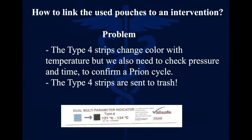What we see many people doing is inserting a type 4 strip inside the pouch. Type 4 strips change color based on temperature — if the temperature moves between 121 and 134 degrees, the color will change. But you have no information about how long the temperature was maintained, and no information about the pressure (3 bar). Not only is this insufficient to verify sterilization quality, but in almost all dental clinics and hospitals, these type 4 strips are thrown in the trash — they are not linked to the patient. So that is not acceptable.